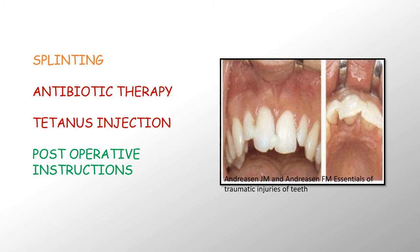Once the tooth is stabilized, it is splinted. In this case, splinting is done using composite, taking support from the adjacent tooth. You can see that the avulsed tooth is nicely stable and fixed in its position. As soon as possible after the injury, antibiotic therapy should be started, and a tetanus injection should be given if the patient has not received one. Also, carefully give post-operative instructions which include maintaining very good oral hygiene — brushing with a soft brush and using chlorhexidine rinses.